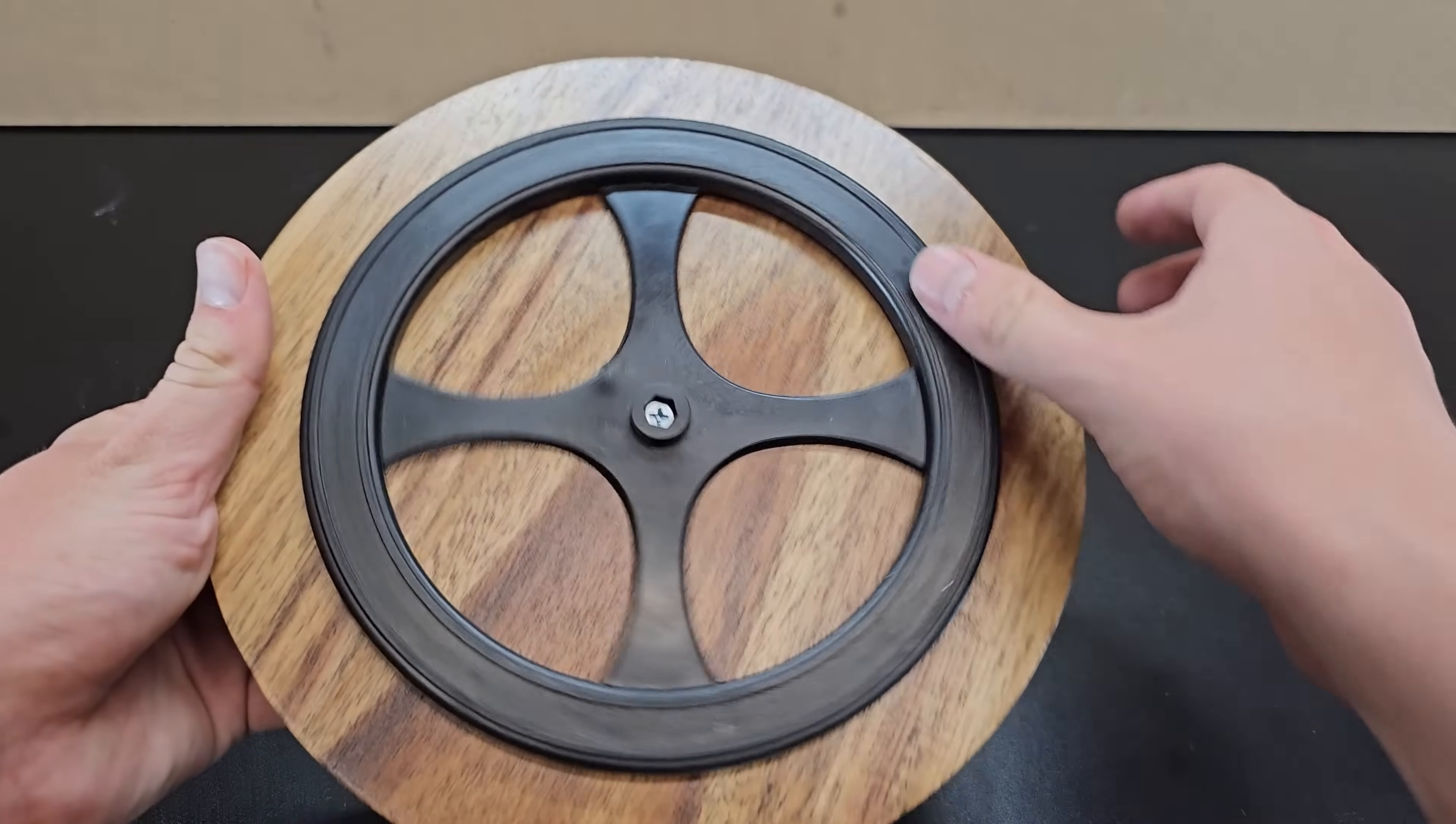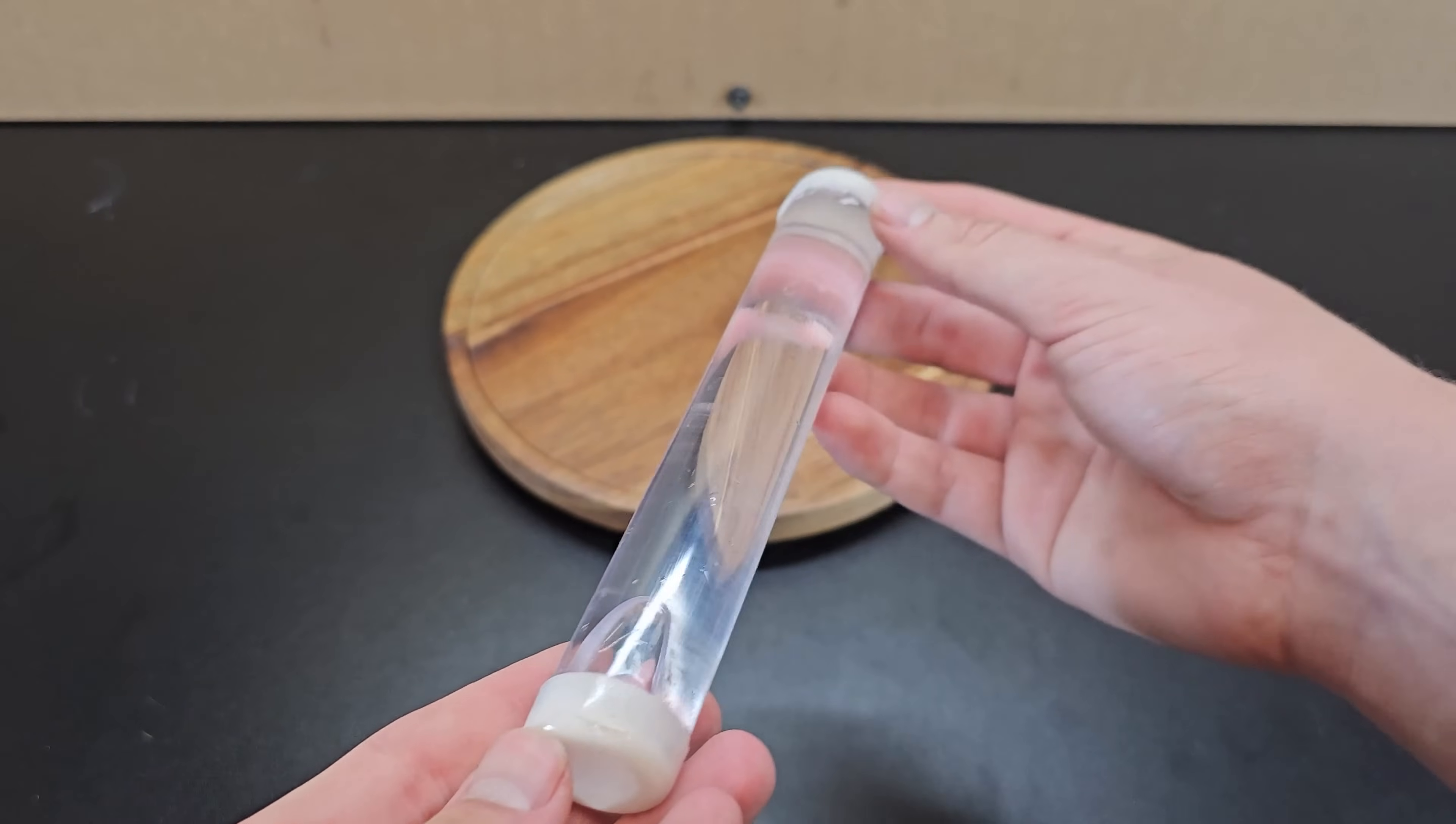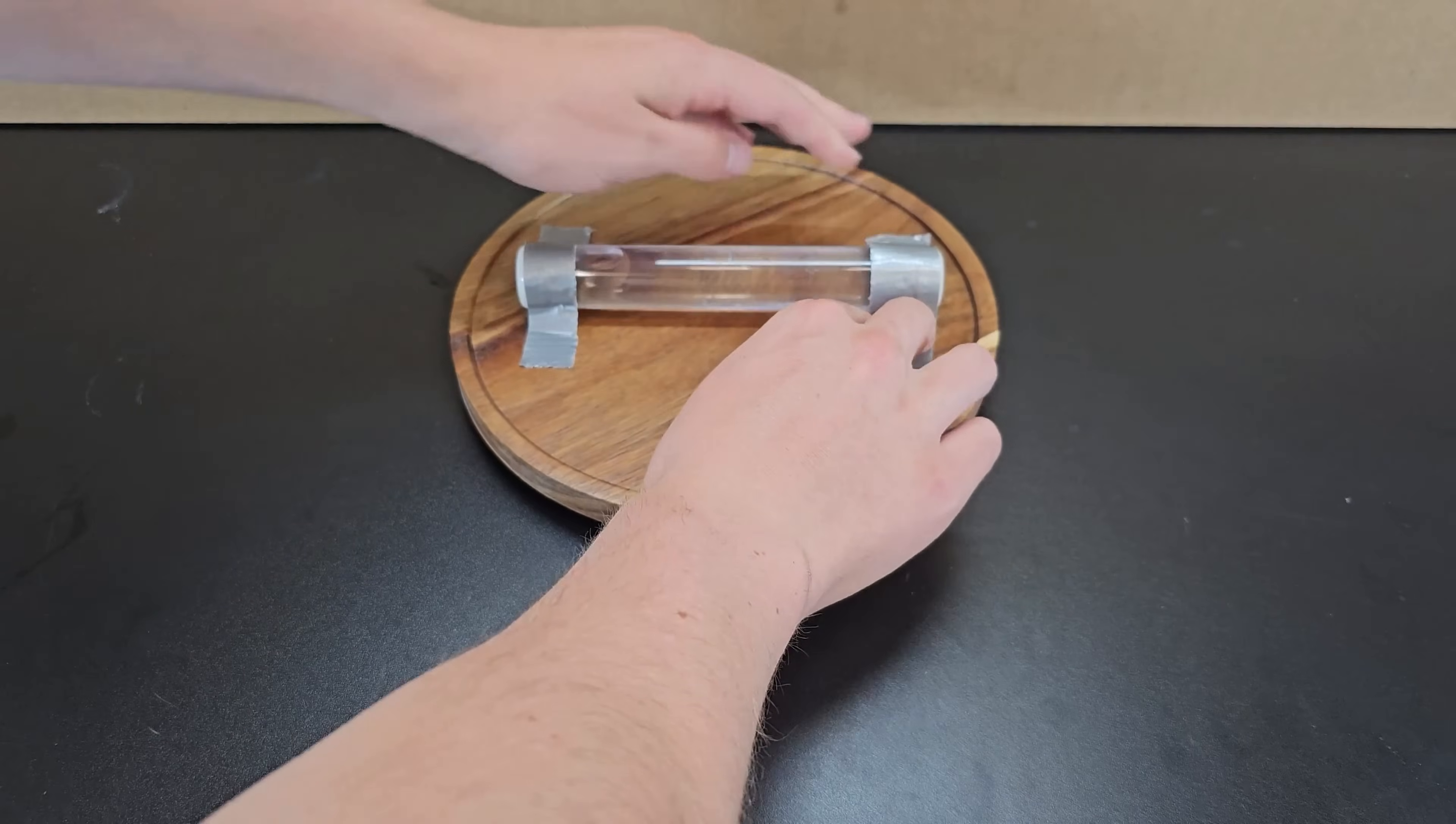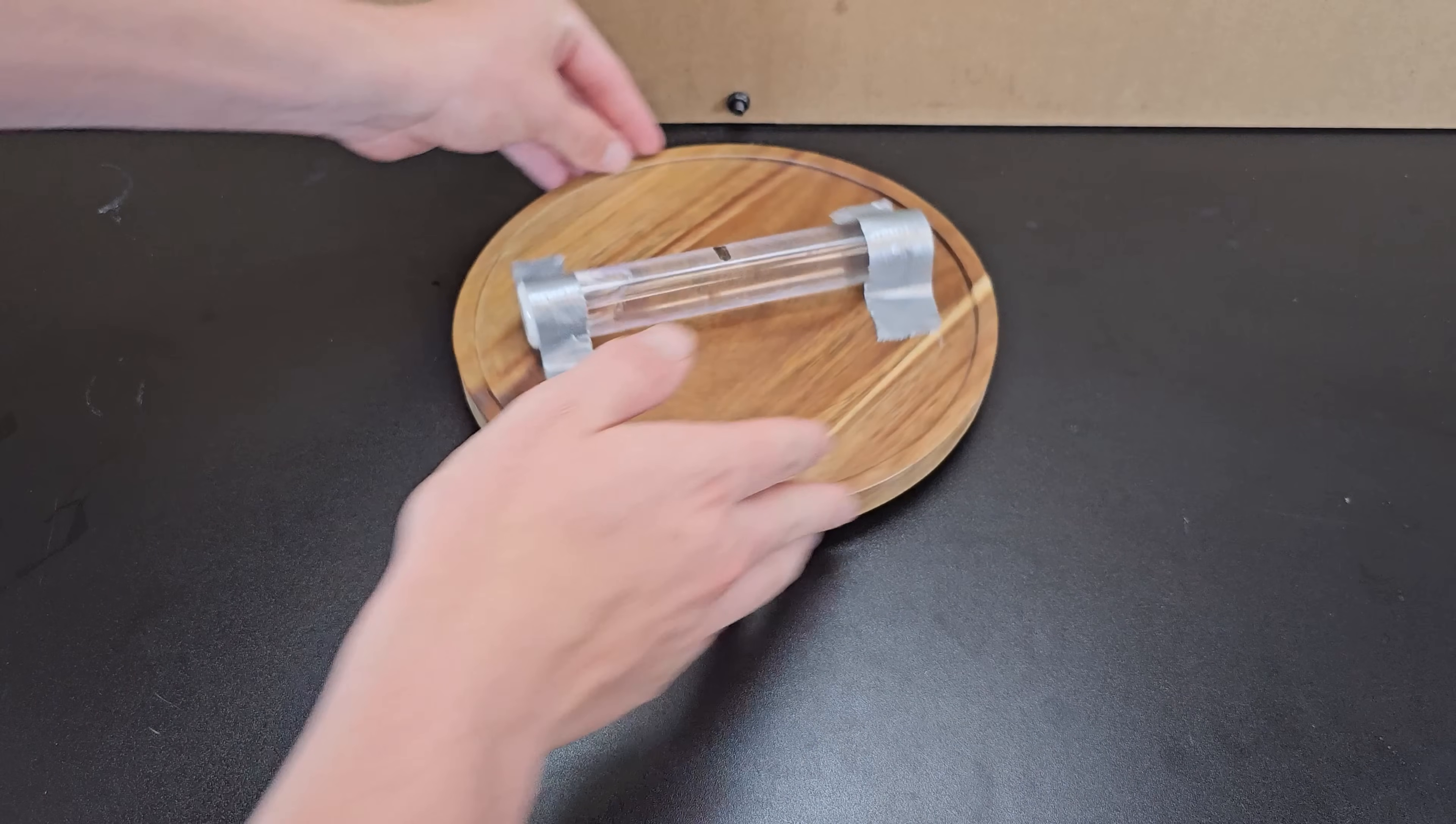If you take a lazy susan and a sealed clear tube of water that has an air bubble in it and tape this tube to the center of the lazy susan, when you spin it the air bubble will move to the center.